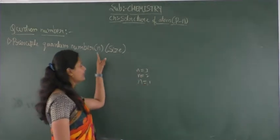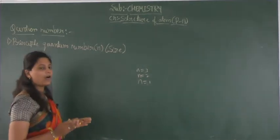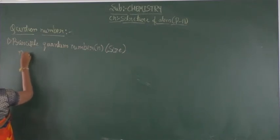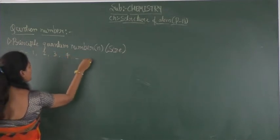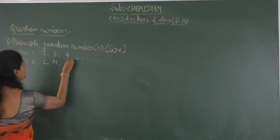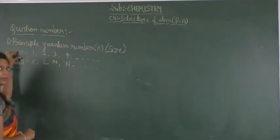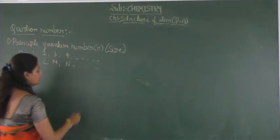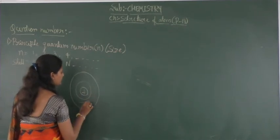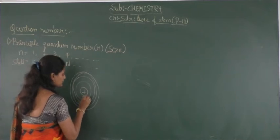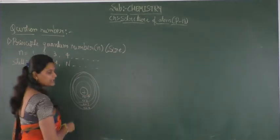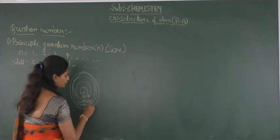The principal quantum number n represents the shell of an atom. Here, the n values are 1, 2, 3, 4, and so on. The shells are represented as K, L, M, and N. So this is the principal quantum number by which we represent the shell of an atom. Imagine the nucleus surrounded by several shells: n=1 is K shell, n=2 is L shell, n=3 is M shell, and n=4 is N shell.